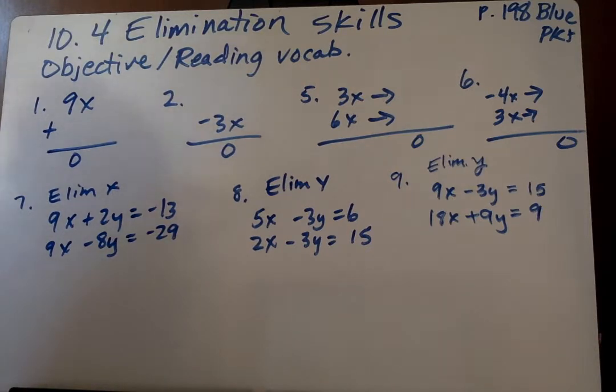The elimination method of solving systems uses algebraic properties to eliminate a variable from the system. The result is a one-step equation to solve the remaining variable. Then, substitution is used to find the still unknown variable.